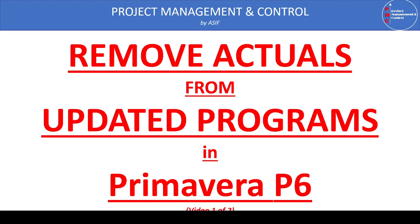I recently faced a situation where I received an update of the approved baseline program from one of our contractors. The issue is that we need to know the status of progress three months prior. At that time, we didn't have the approved baseline program or the approved BOQ, so we were using a program for monitoring and control purposes only. This progress cannot be taken as authentic because the weighted factors and costs assigned were not approved, so we cannot use it to pay the contractor.